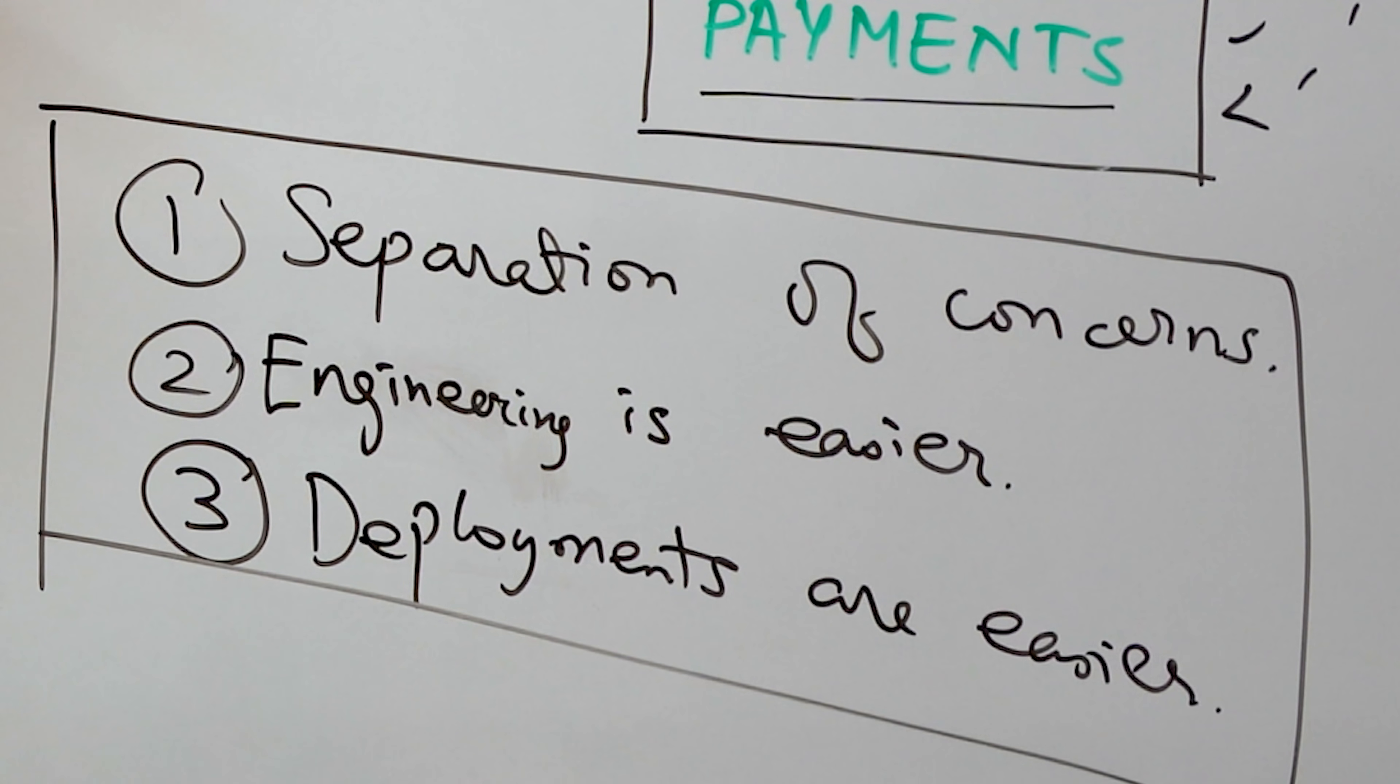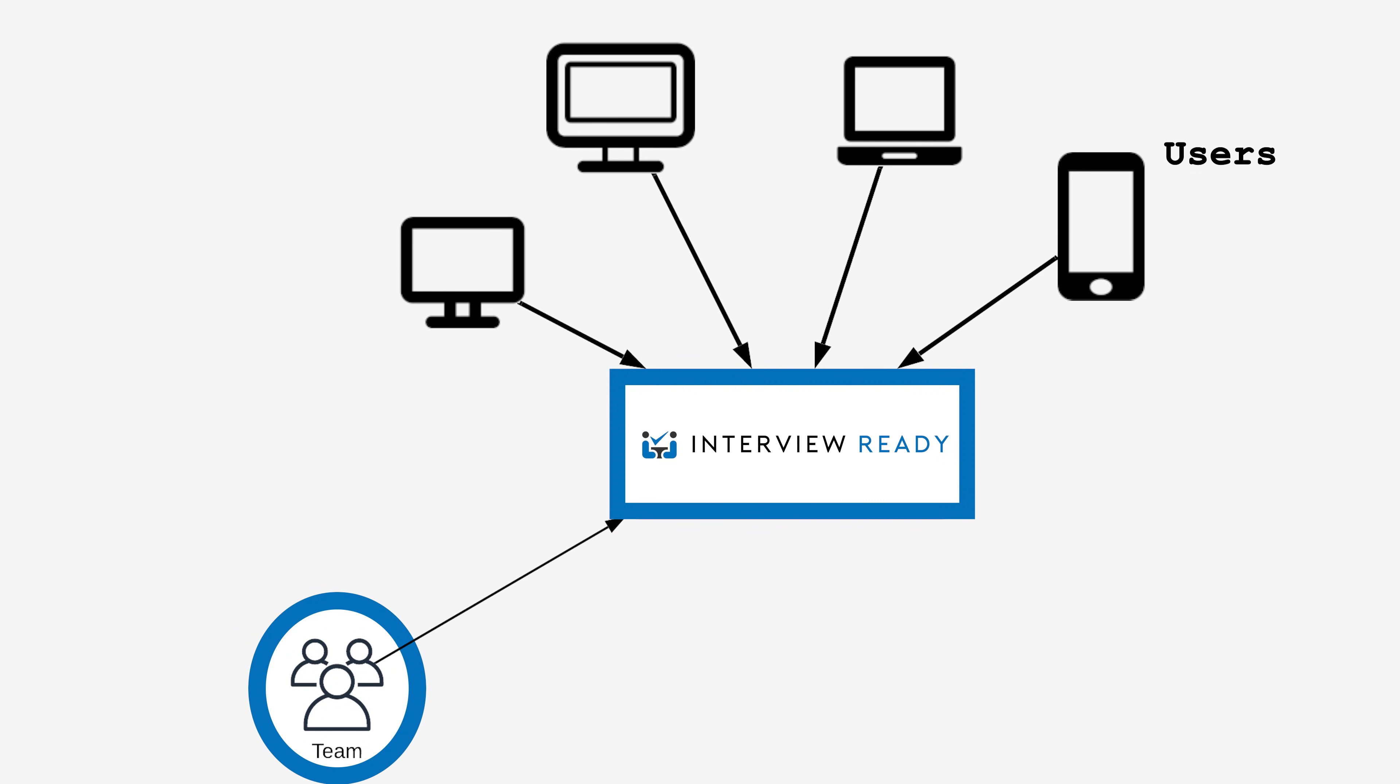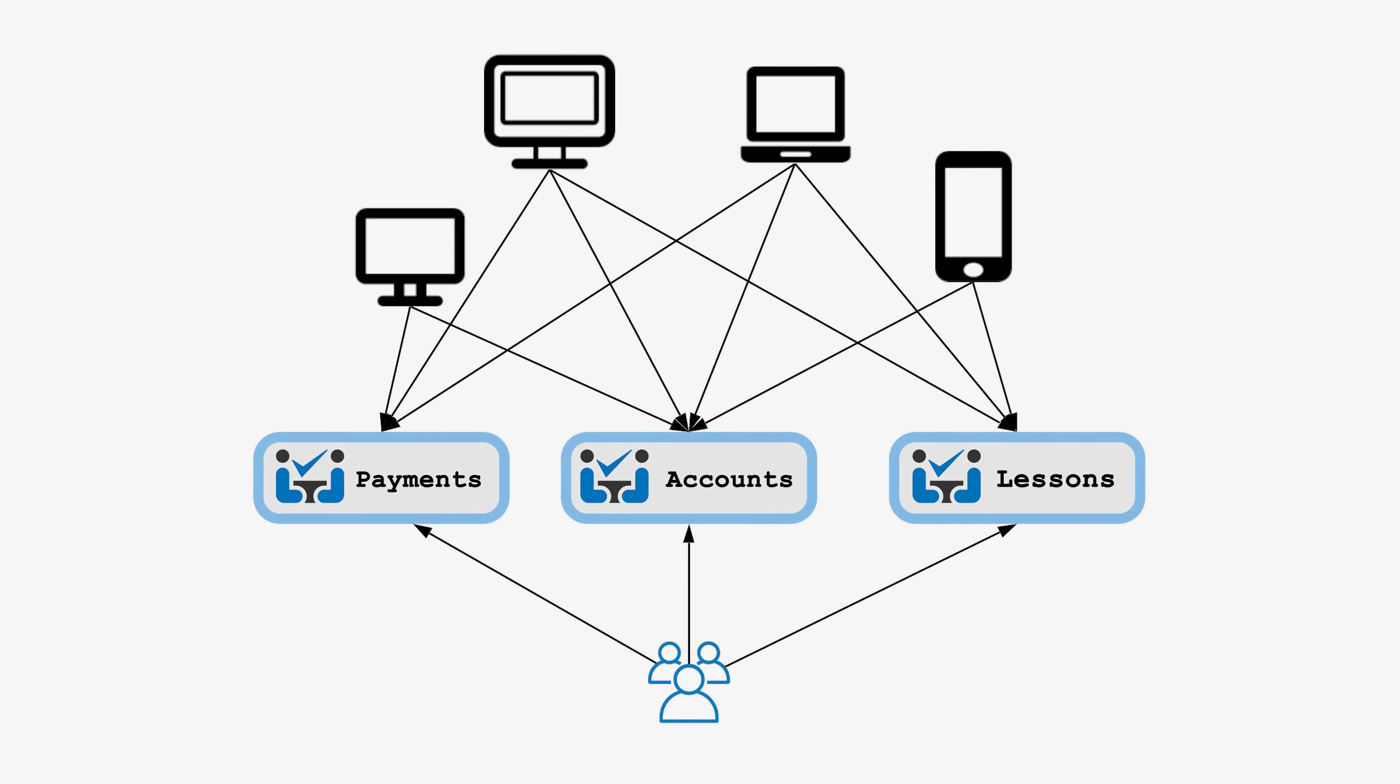Monoliths also have certain advantages. The time when you move to a microservice architecture is not when you have a lot of scale, not when all of your users are coming in. You move to a microservice architecture when your team has scaled. When you have a large team and all of them want to move about individually. You have different product teams working on different products. You want deployments to be smooth. That's when you move from monoliths to microservices.